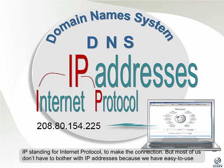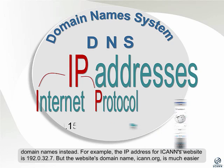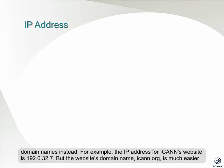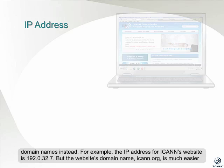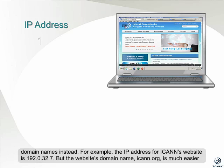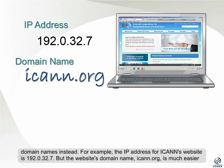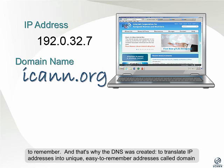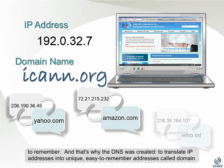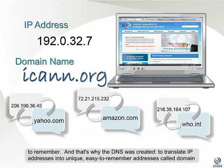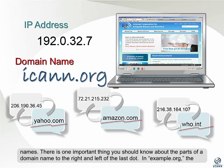But most of us don't have to bother with IP addresses because we have easy-to-use domain names instead. For example, the IP address for ICANN's website is 192.0.32.7. But the website's domain name, ICANN.org, is much easier to remember. And that's why the DNS was created – to translate IP addresses into unique, easy-to-remember addresses called domain names.